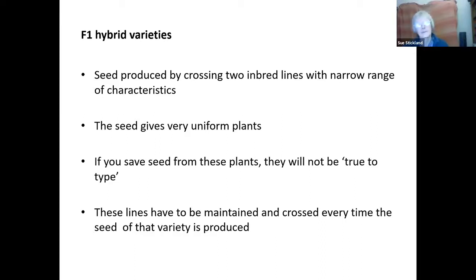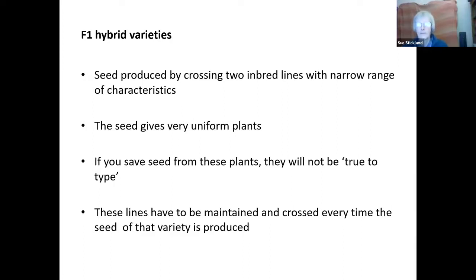This uniformity is valuable to commercial growers — for example, F1 hybrids can all be harvested at once — but not necessarily to gardeners or those growing for a box scheme, who want a long harvest period. Even having them all the same size isn't desirable in those contexts. If you try to save seed from F1 plants, they won't come true to type — they won't look like the parent plants, they might be sterile, or they'll produce plants of a whole mix of shapes, sizes, and types, often of poor quality.